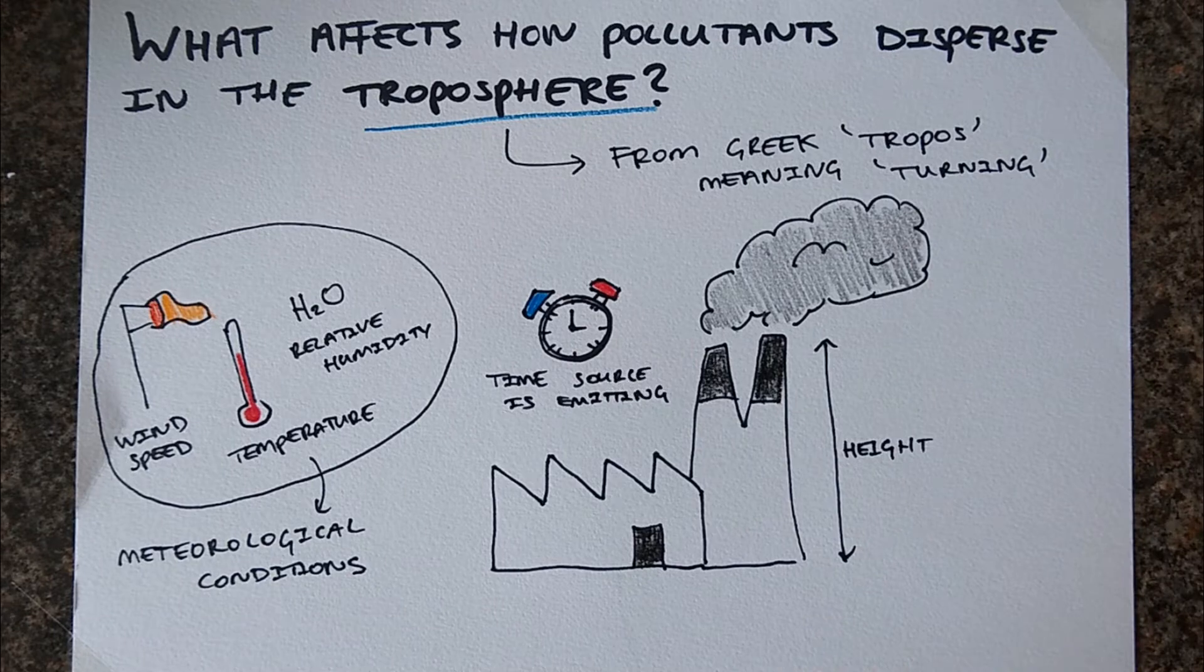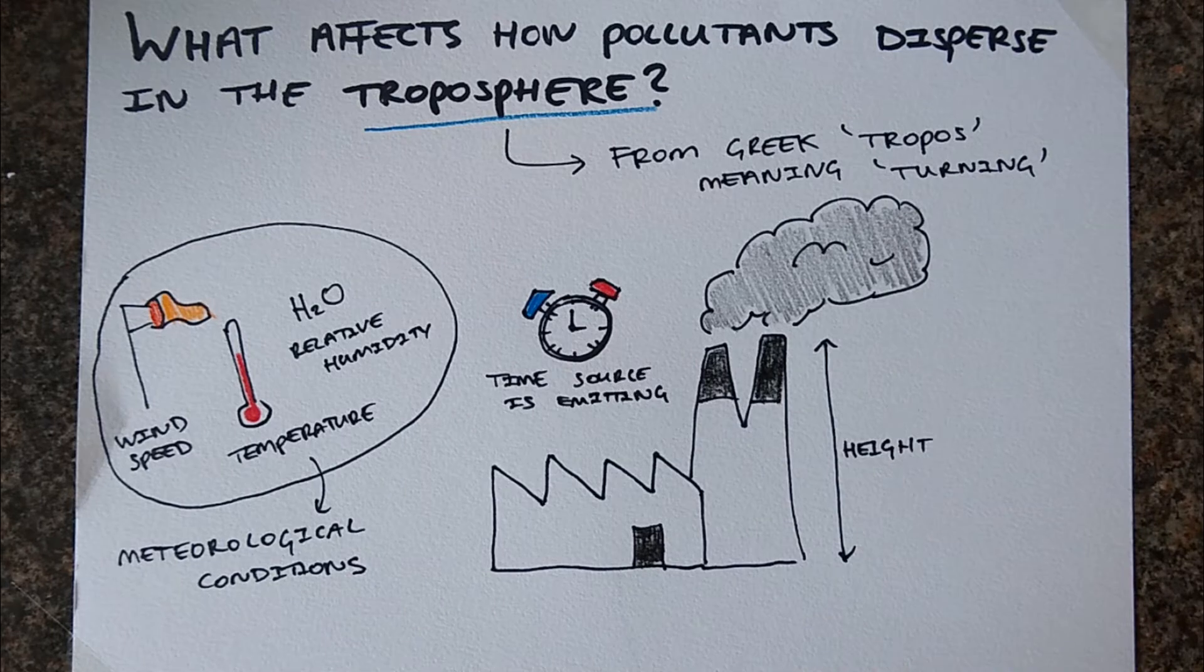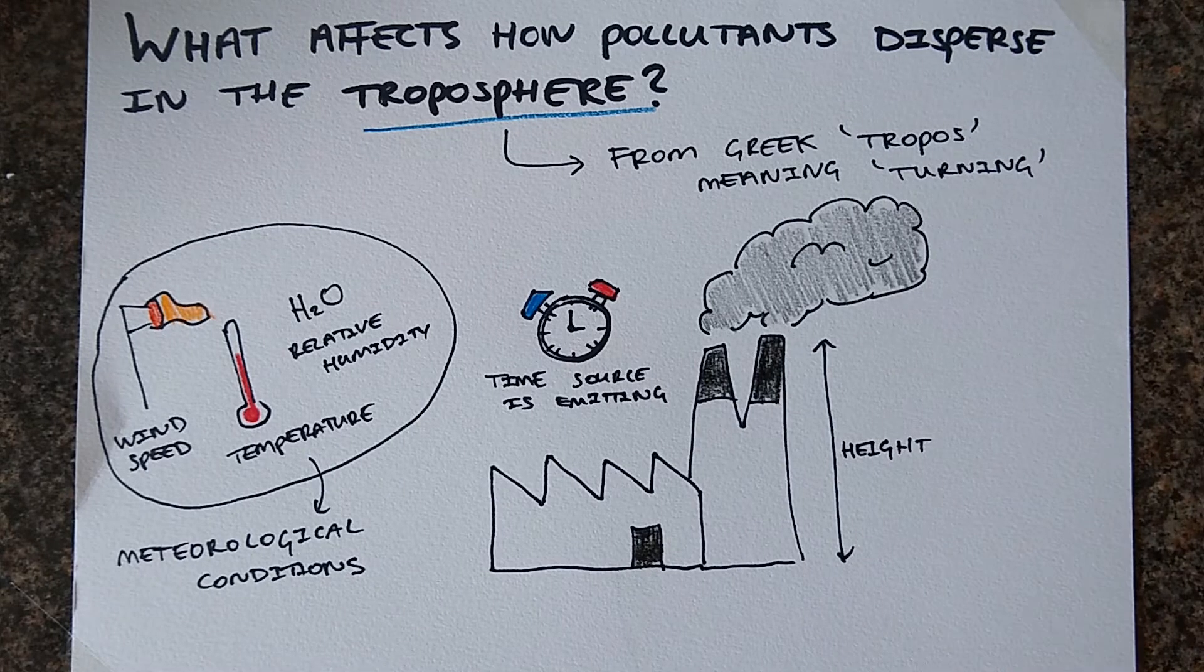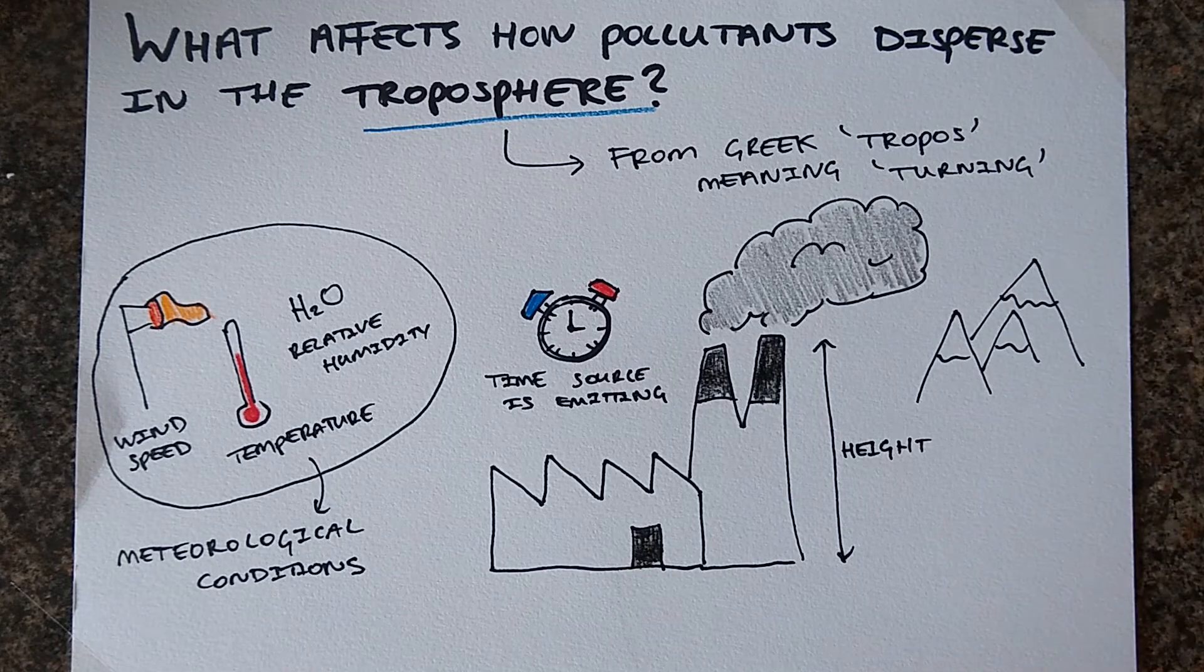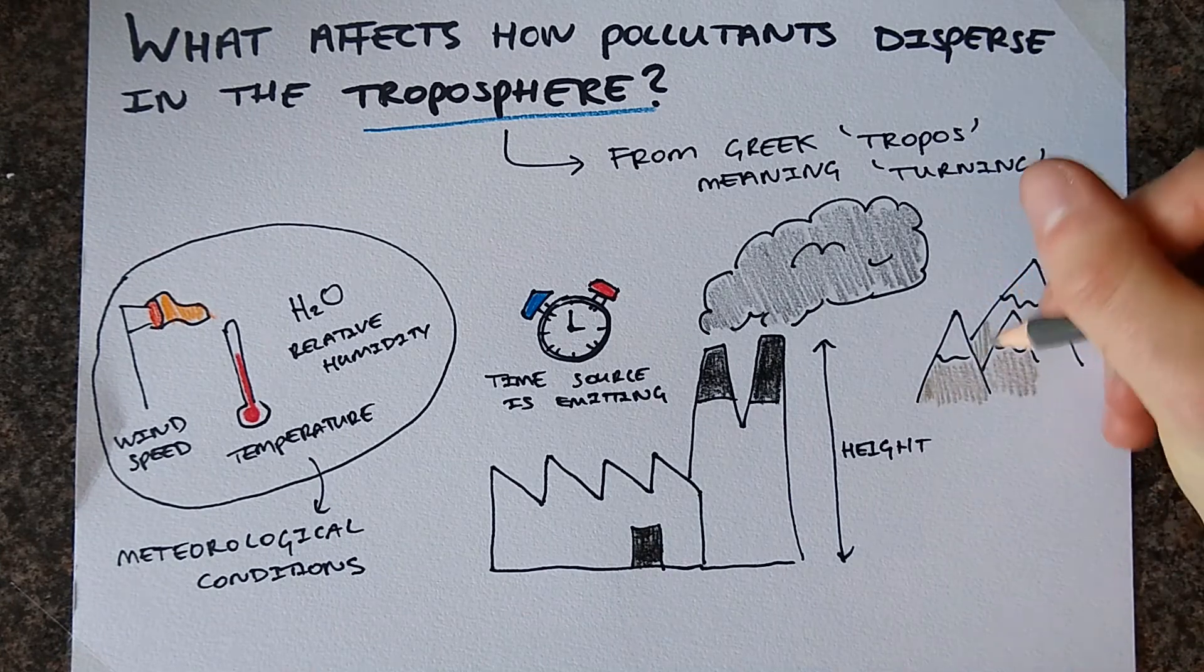The height of the emission source, whether they are being emitted at ground level from a car exhaust or 100 meters in the air from a stack or flue. The terrain, whether it is mountainous or flat, will affect how the pollutants disperse over the landscape.